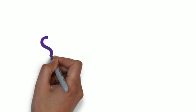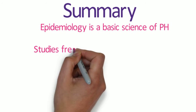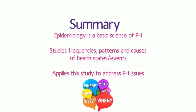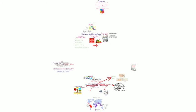As a basic science of public health, epidemiology includes the study of frequency, patterns, and causes of health-related states or events in populations and the application of that study to address public health issues. Epidemiologists use a systematic approach to assess the what, who, where, when, why, and how of these health states.